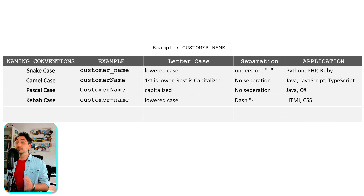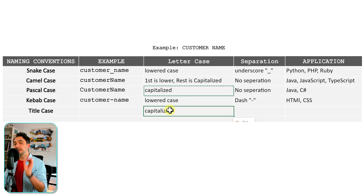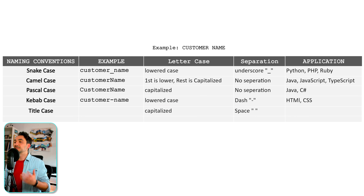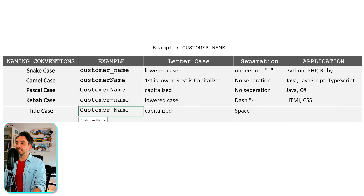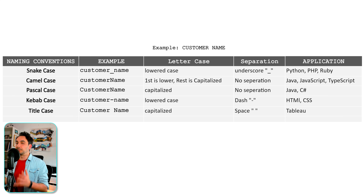Now we have another naming convention — this one is very important — called title case. It has nothing to do with animals or foods, sadly. The rule: words are capitalized and separated with a white space. Applying those rules to our example gives us: Customer Name. This is important because it is the naming convention that the Tableau team decided to go with. Tableau enforces this convention on all your data — once you connect your data to Tableau, it cleans up and renames everything following this rule. It's really friendly and easy to read, but sometimes in projects you are required to follow a different naming convention, and then you have to go and rename everything again.